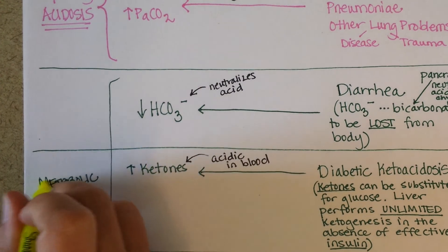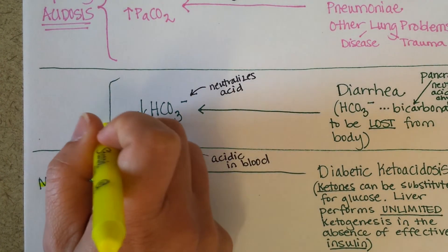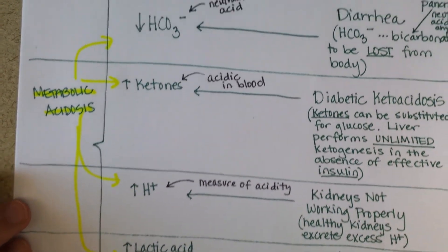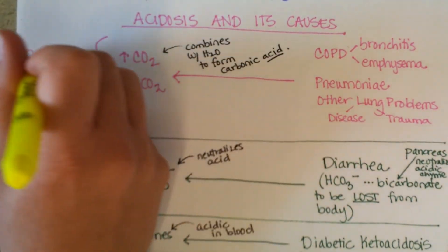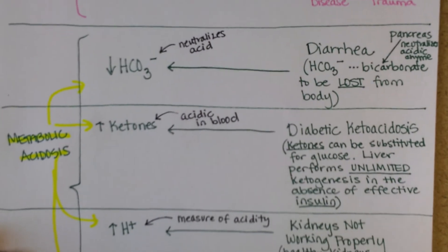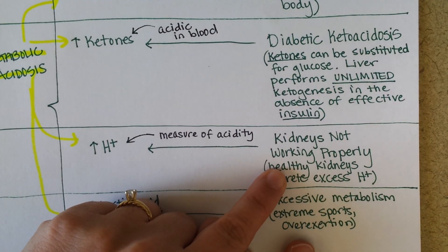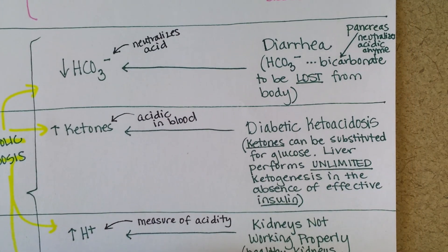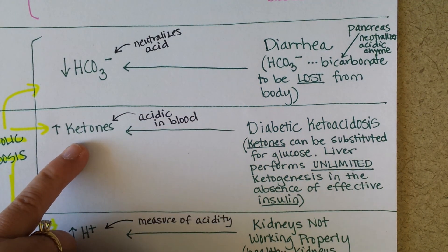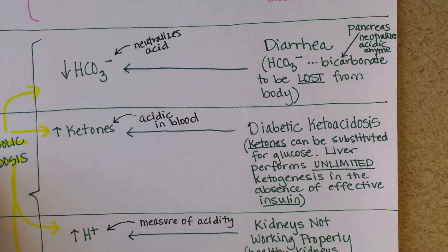So metabolic acidosis has four causes we looked at, and respiratory acidosis has one cause: the lungs not working right. A patient can suffer from acidosis if their lungs aren't working, if their kidneys aren't working, if they're losing too much bicarbonate from diarrhea, or if their metabolism is making too many acidic byproducts such as ketones. On the next page, we'll look at respiratory and metabolic alkalosis.